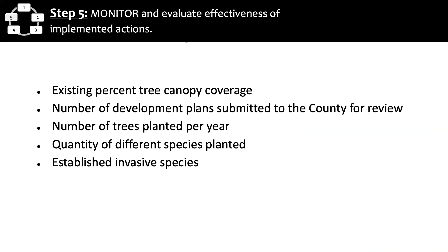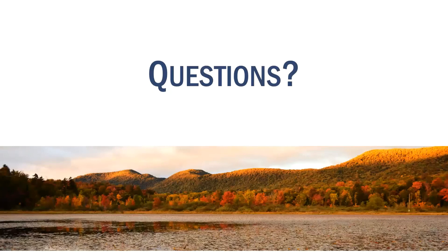Step five involves monitoring and evaluating the effectiveness of implemented actions to help identify how they might need to keep track of changing conditions and adjust management in the future. Fairfax County identified a need to monitor existing percent tree canopy cover, the number of trees planted per year, the quantity of different species planted, and the abundance of established invasive species. Hopefully that reinforced how all of these pieces fit together. We can open it up for a couple of questions before turning it over to Courtney for pro tips and next steps.